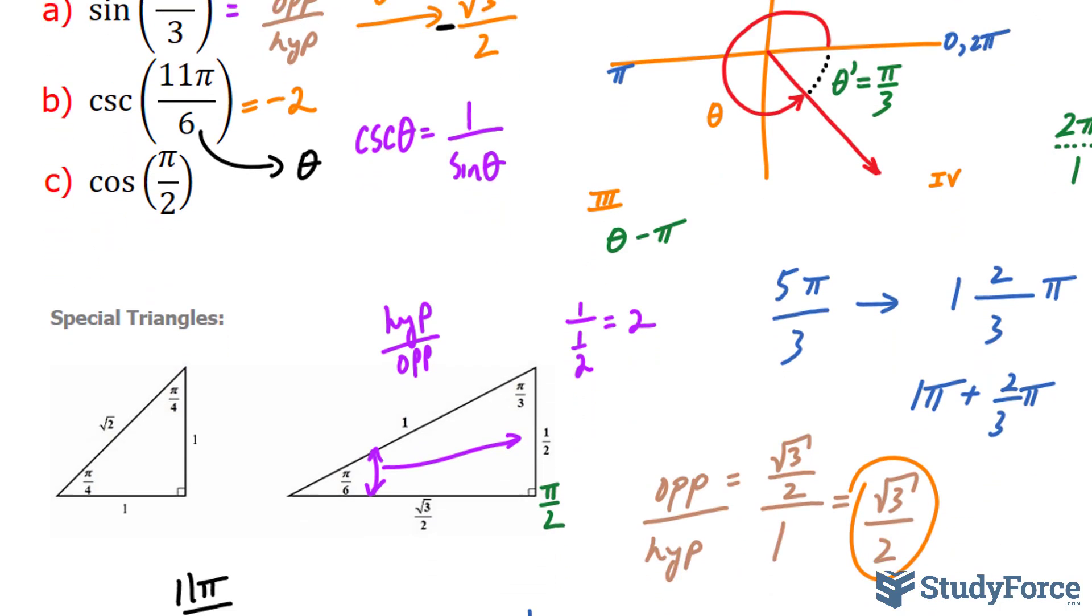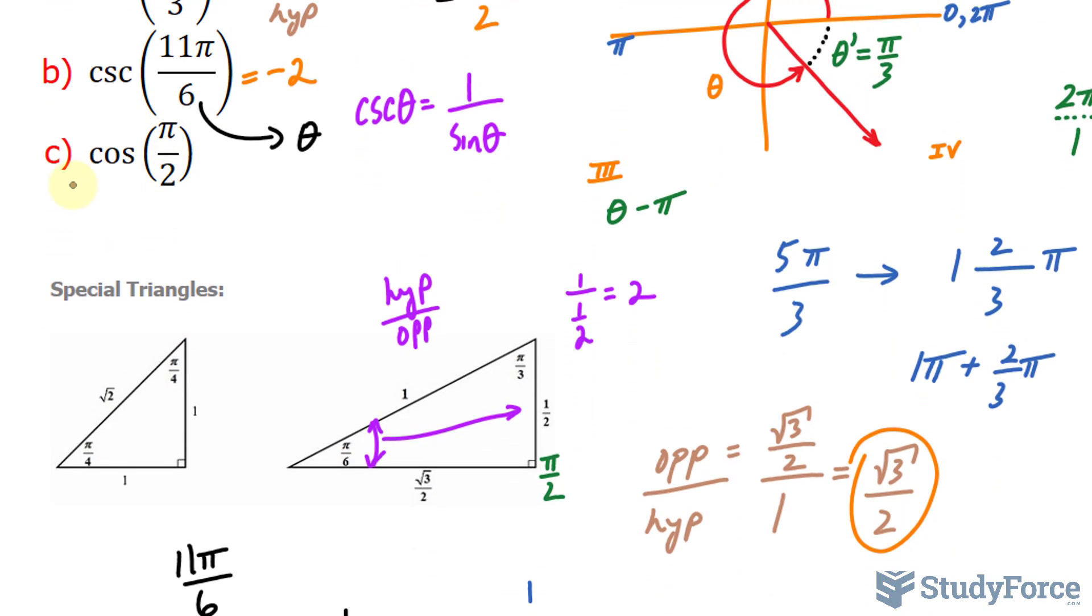One strategy that you can use for some of these problems is for questions like question C. In question C, we have an angle, π over 2, that's very familiar to us. Most of us know that π over 2 is 90 degrees. And if you know that, that actually helps because when you have an angle that you're familiar with...